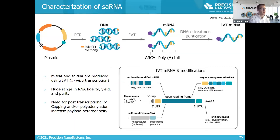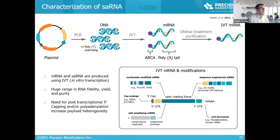Before going deep into SARNA, it's important to describe where this molecule comes from and how we produce it. Because of its length and size, we cannot synthesize this molecule chemically — RNA synthesis is limited to about 30 to 40 nucleotides. Anything larger is produced with a process called in vitro transcription, where you take a plasmid or linear DNA, linearize it with the sequence you're looking for, and add enzymes to produce an mRNA transcript.